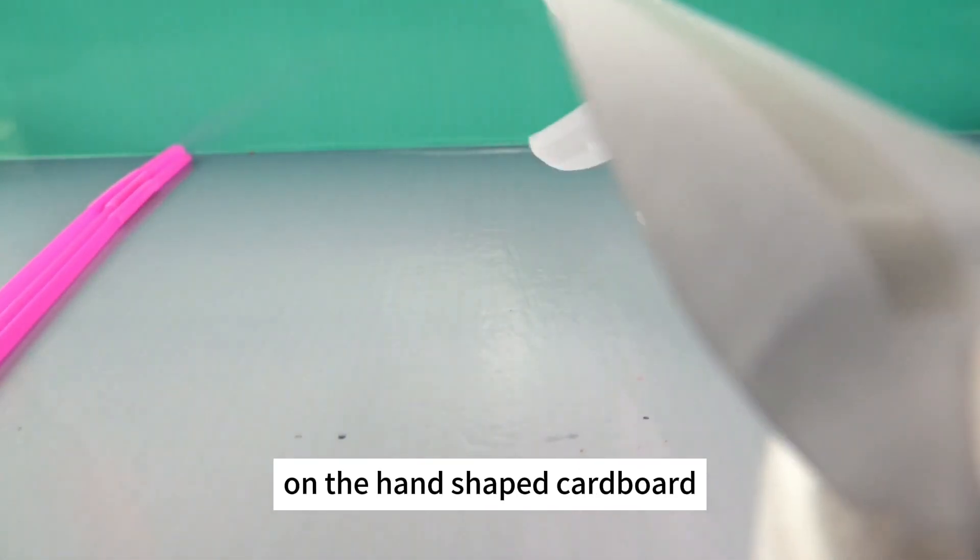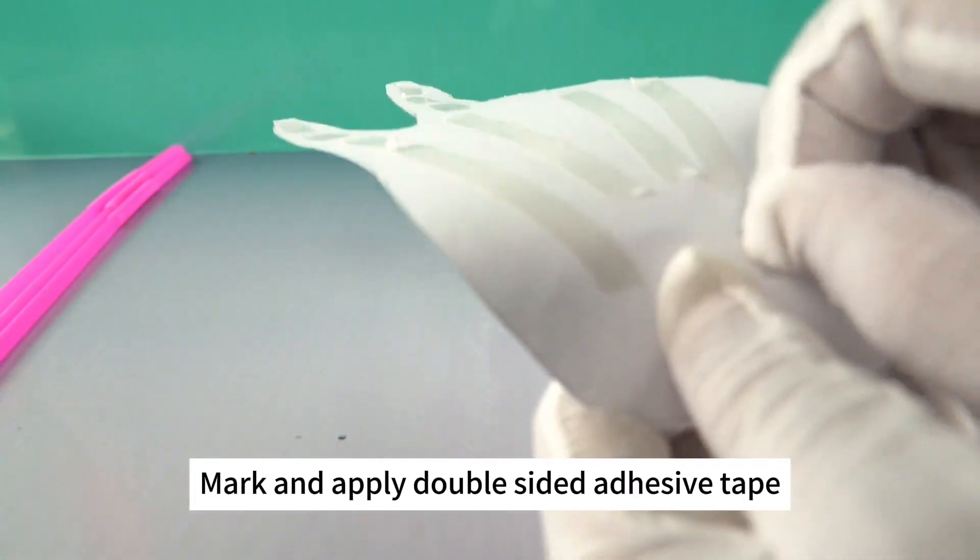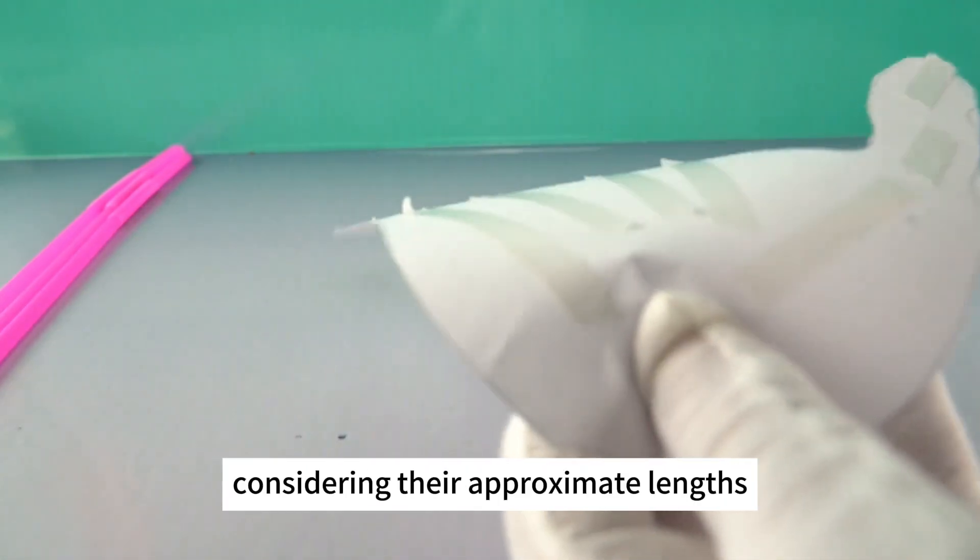Number two. On the hand-shaped cardboard, mark and apply double-sided adhesive tape where the joints of the fingers would be, considering their approximate lengths.